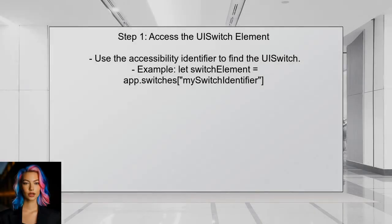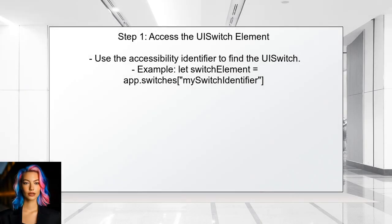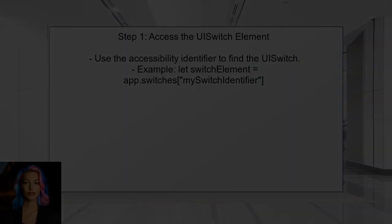To check the on or off state of a UISwitch in XCUITest, the user should first access the UISwitch element using its accessibility identifier. This is crucial for identifying the specific UISwitch they want to interact with.